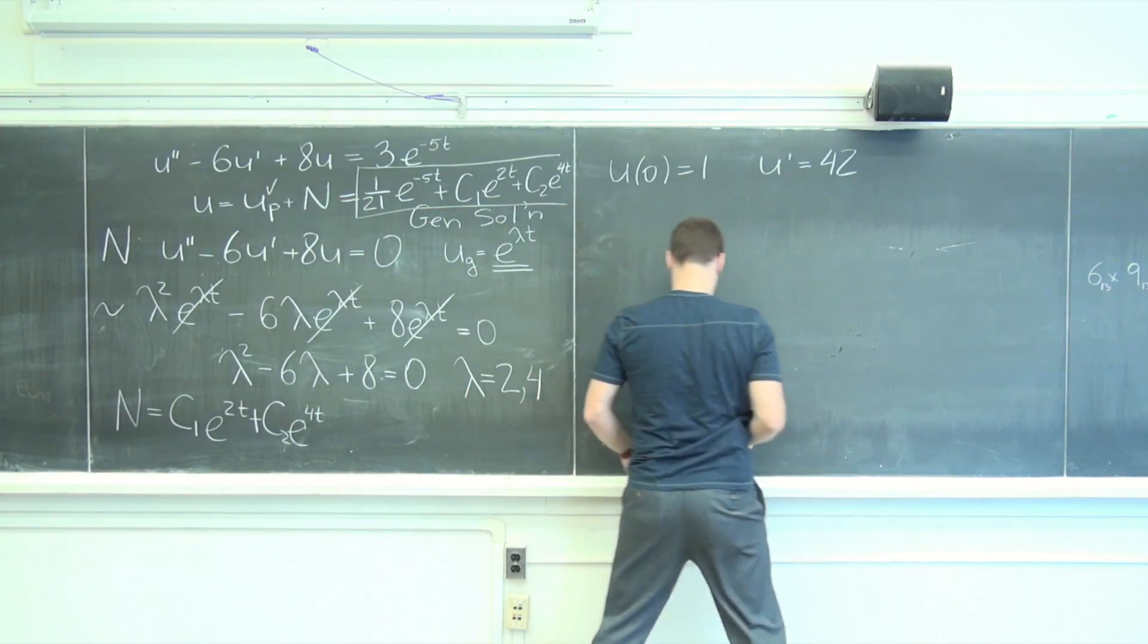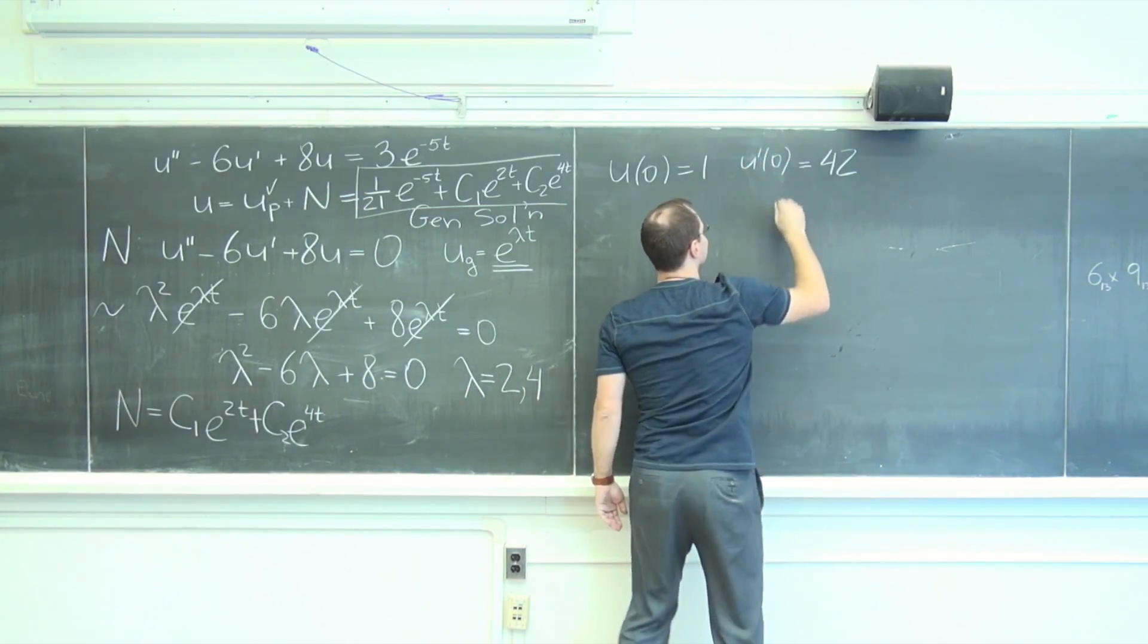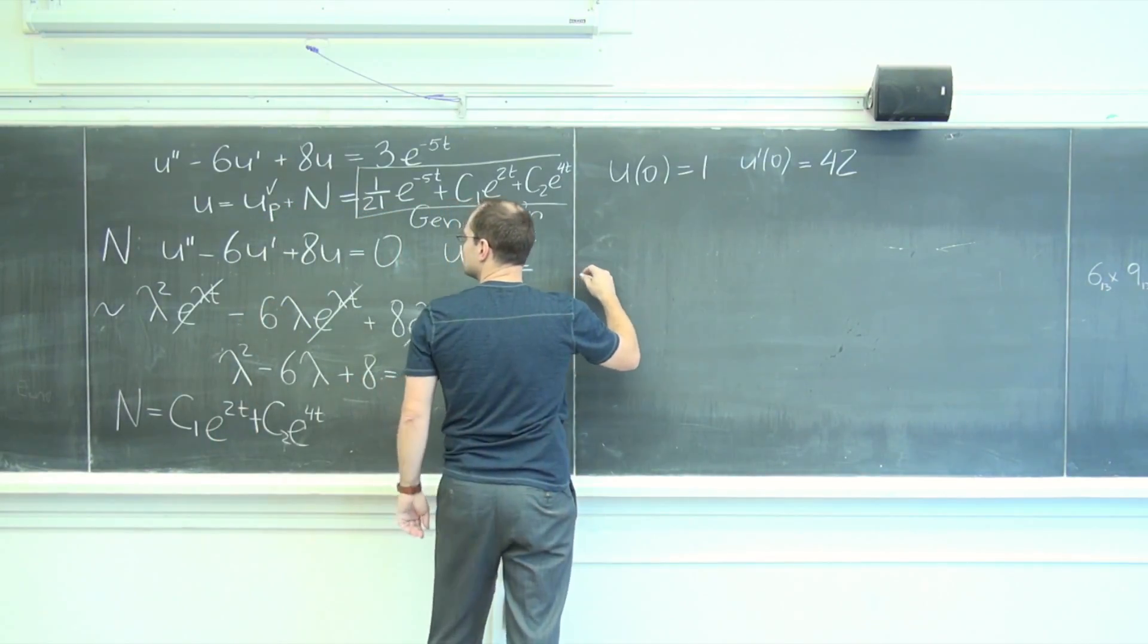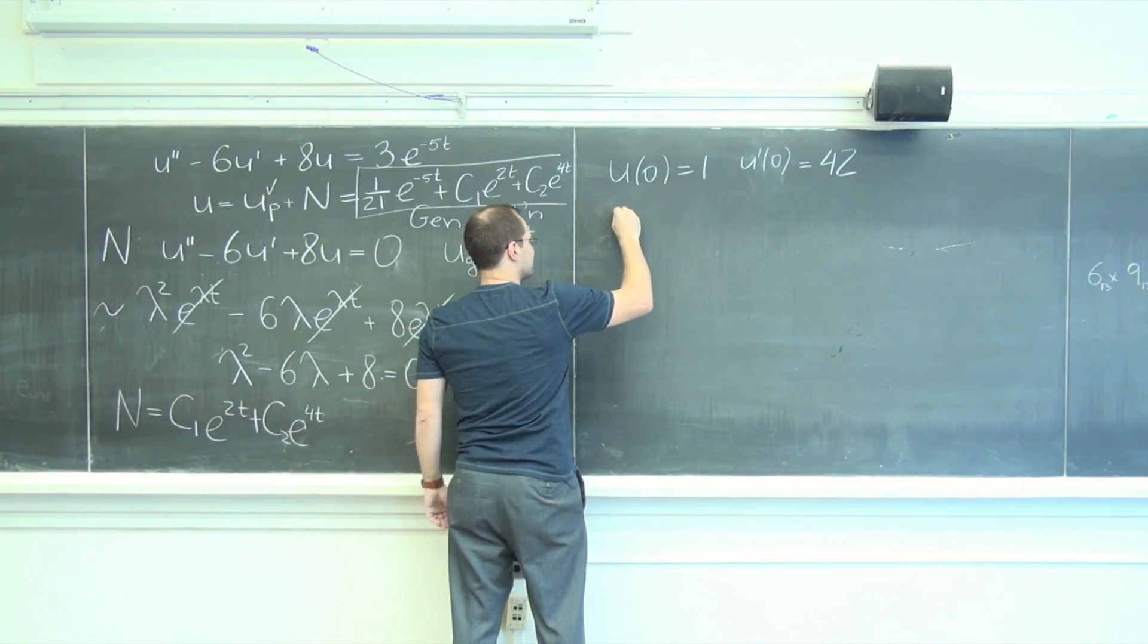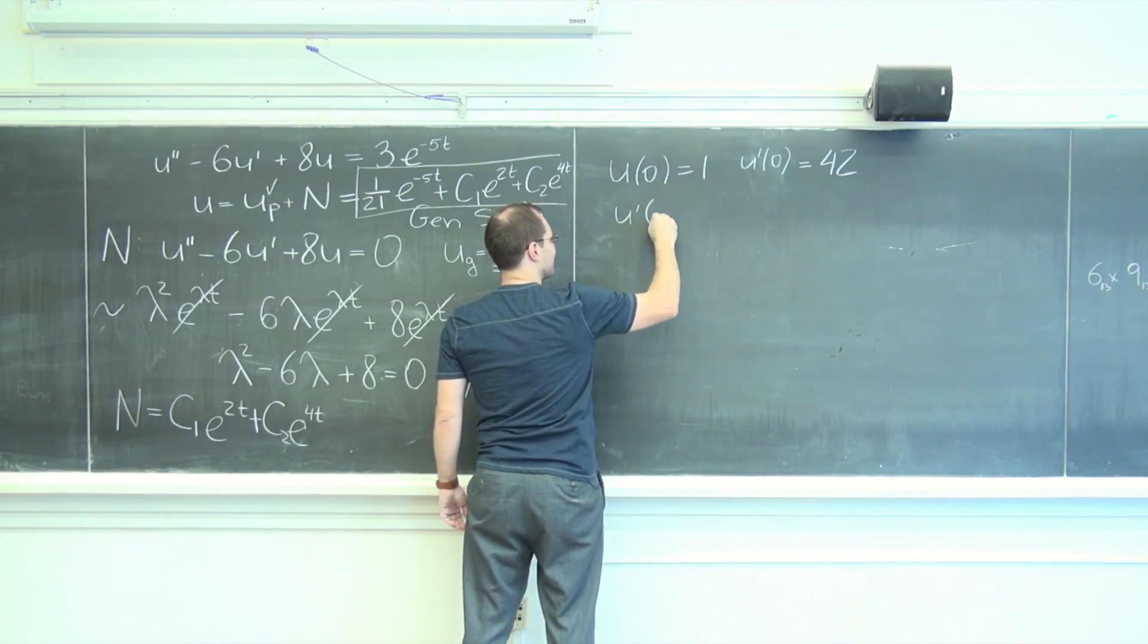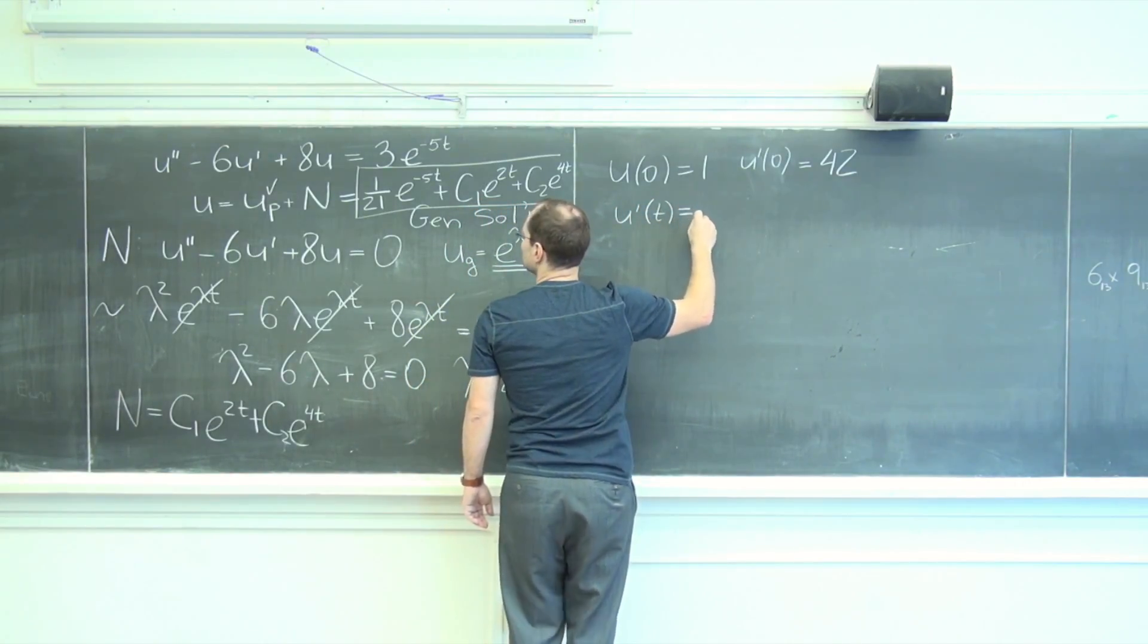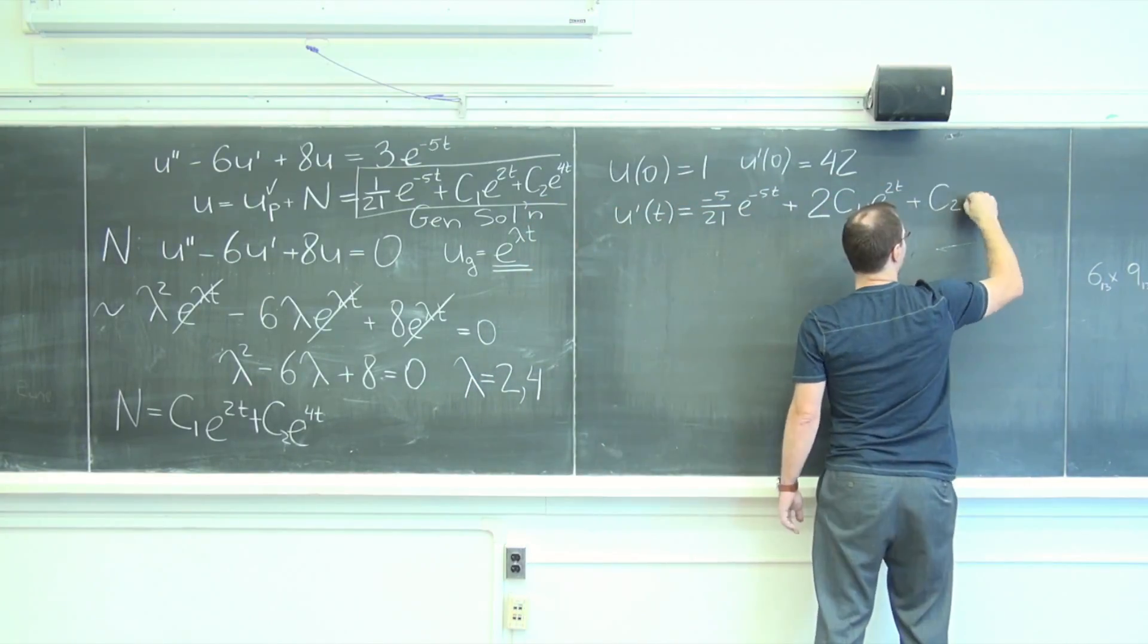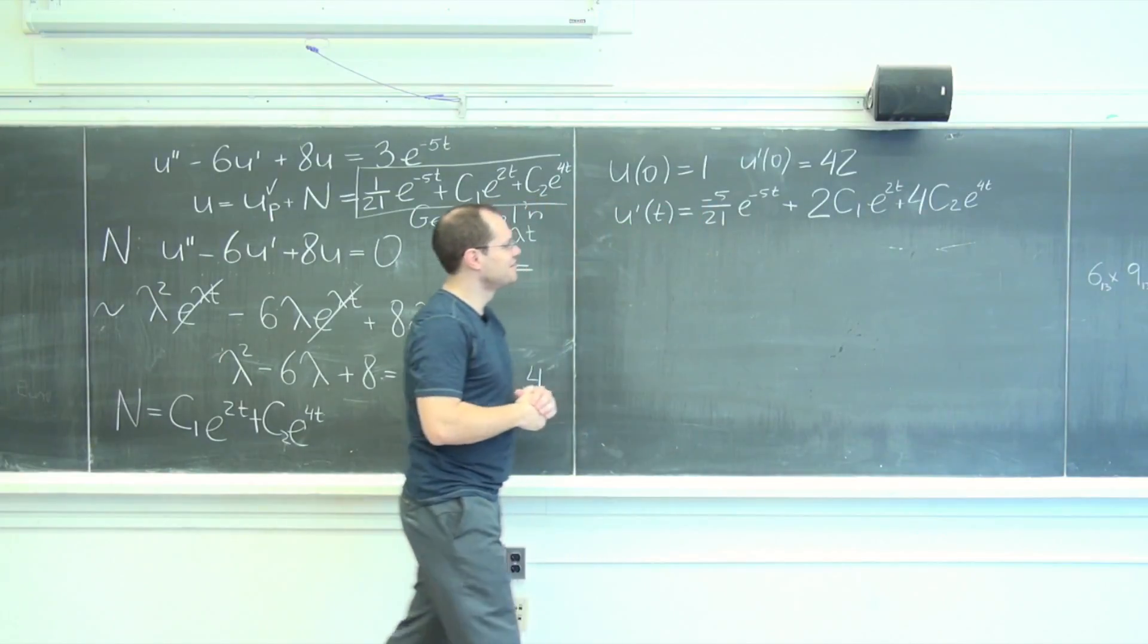Because to plug this in, so each one will end up being a linear equation, so u of zero. Oh wait, sorry, u prime we need, of t, equals.